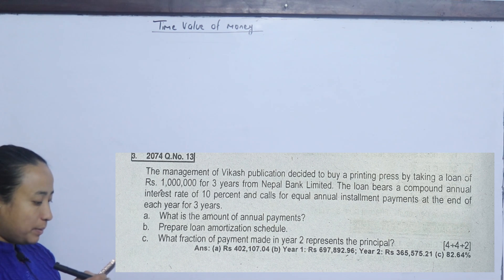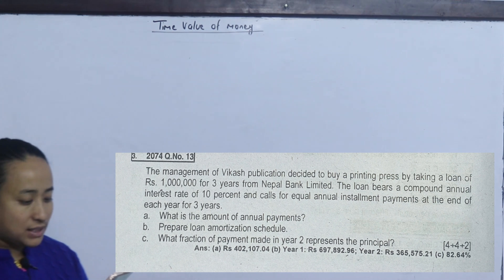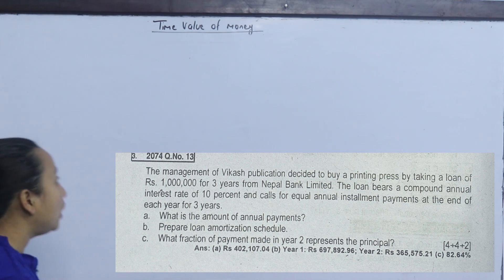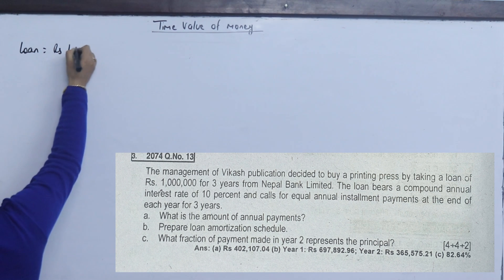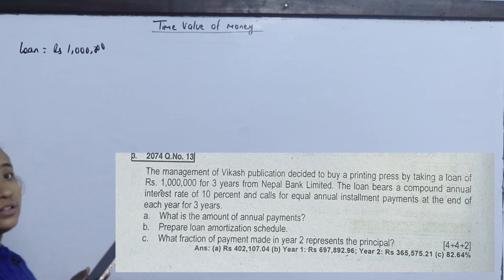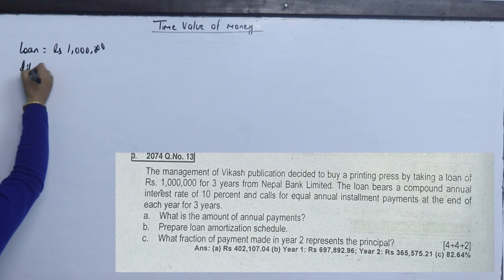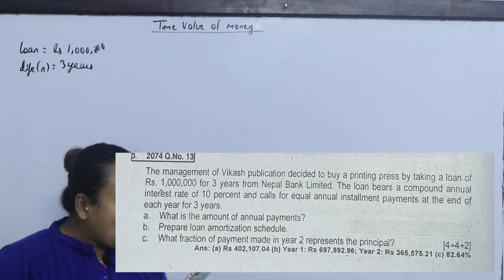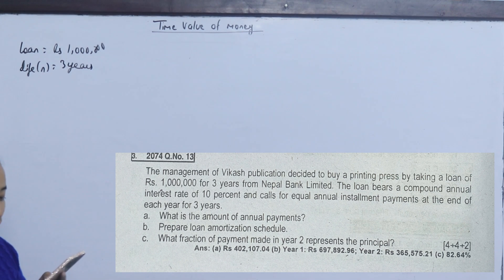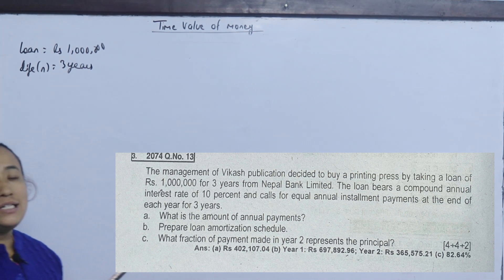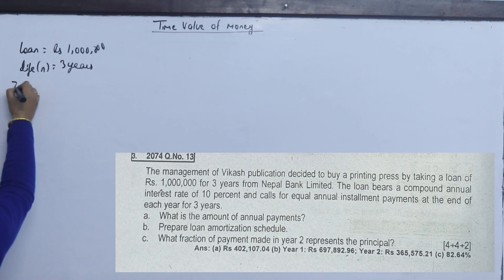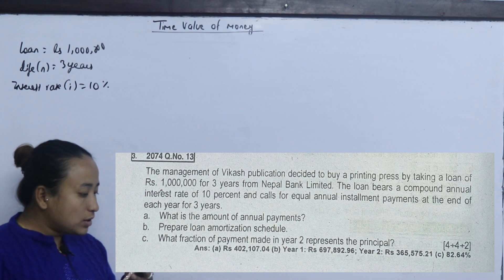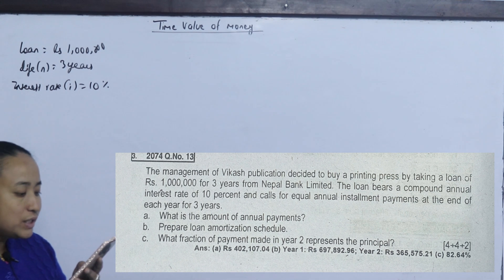The management of Vikas Publication decided to buy a printing press by taking a loan of rupees 1 million from Nepal Bank Limited. The loan is for 3 years and bears a compound annual interest rate of 10%.